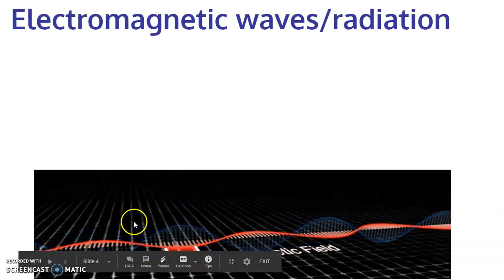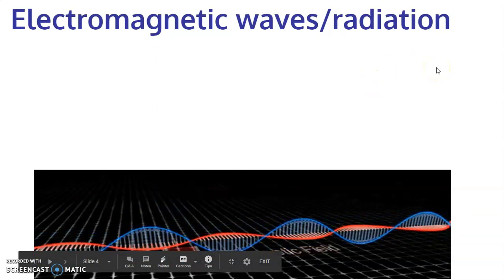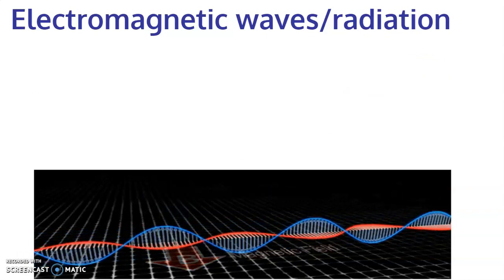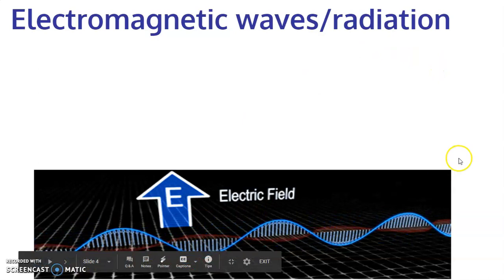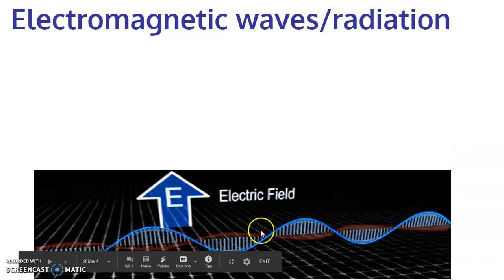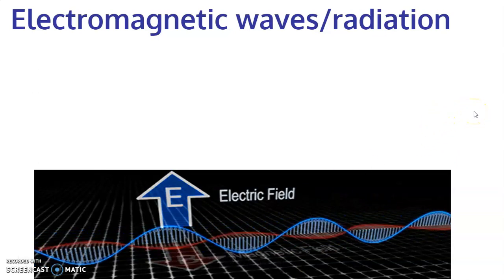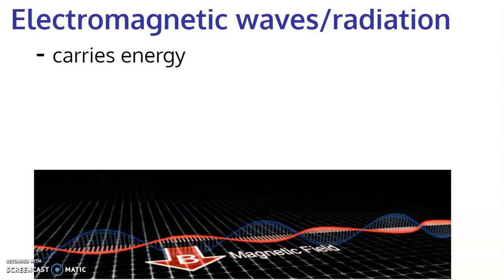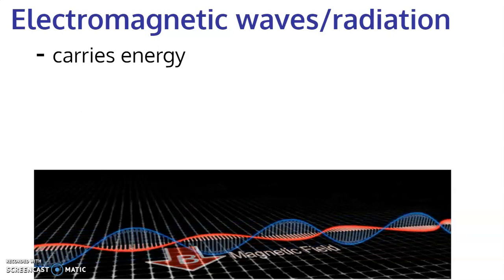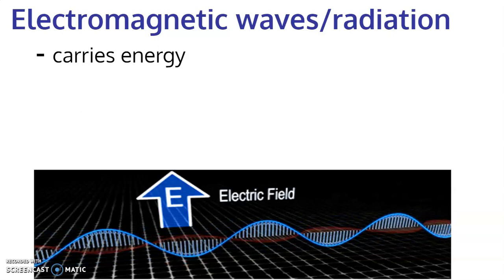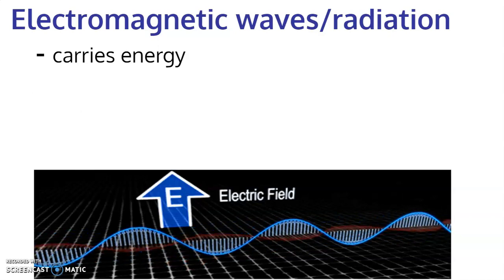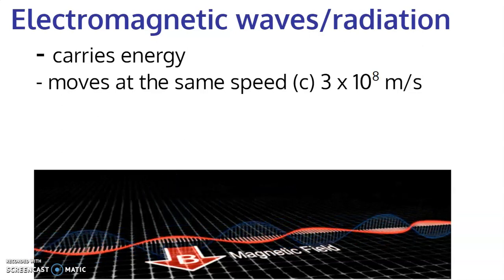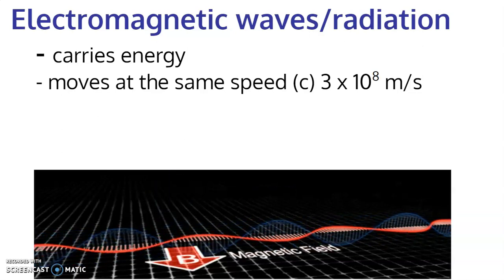This is our best model of light: an electric field generates a magnetic field, which generates an electric field, and so on. You have these two waves oscillating at 90-degree angles, and the only speed they can travel to maintain that arrangement is the speed of light. We consider light to be electromagnetic waves. The light you can see — visible light — represents a very small part of the electromagnetic spectrum. Many things are electromagnetic waves; light is just one of them.